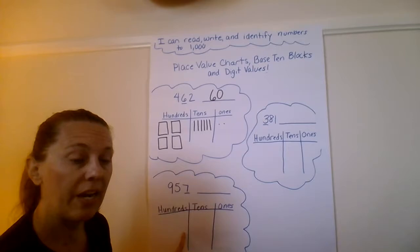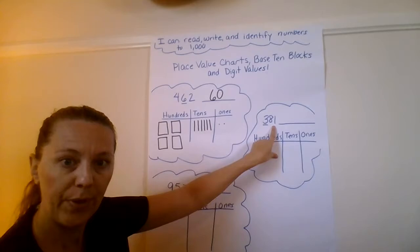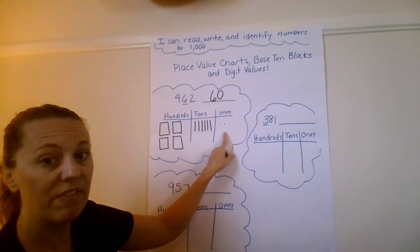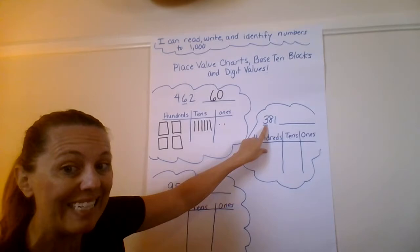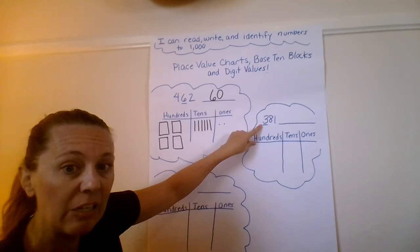Okay? Let's try another one. I have another number, 381. Okay? Same thing. I'm gonna work smarter, not harder. I'm going to do very simple base 10 block drawings, and I'm gonna represent the value in my place value chart.